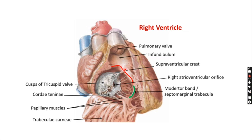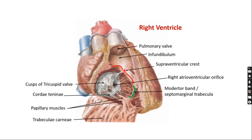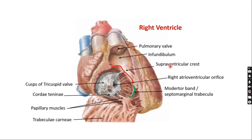Both parts are separated by a muscular ridge called the supra-ventricular crest, otherwise known as the infundibular ventricular crest. This muscular ridge divides the inflowing part and the outflowing part. To summarize external features: two surfaces — anterior and inferior; interior has two parts — inflowing (rough, trabeculae carneae) and outflowing (smooth), divided by the supra-ventricular crest.